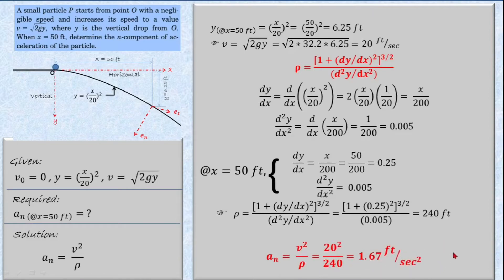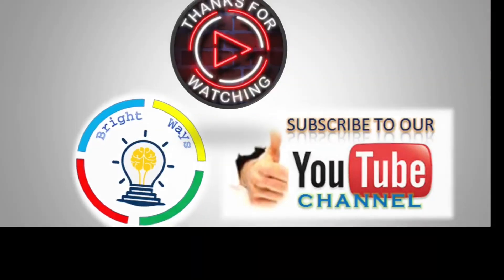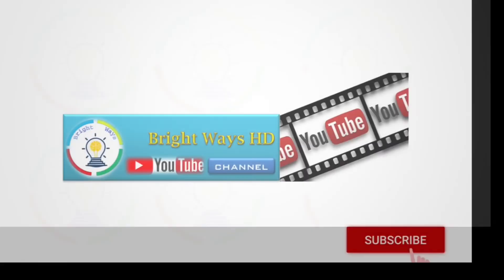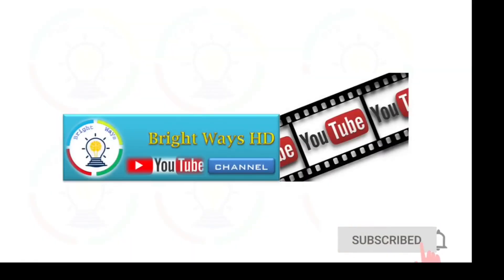Now we are ready to evaluate the final normal acceleration at the given point. The normal acceleration aₙ = v²/ρ = (20)²/240, which gives 1.67 feet per second squared. This is our final answer for the normal acceleration at x = 50 feet. Thank you for watching — please subscribe to our YouTube channel for more interesting videos.